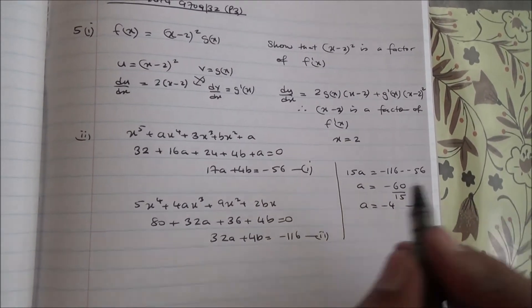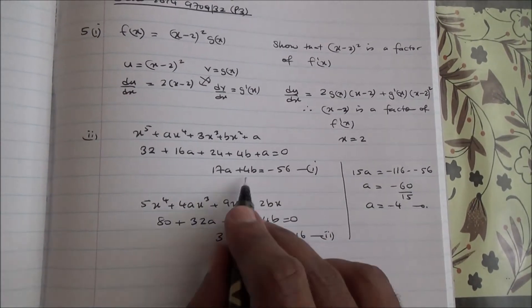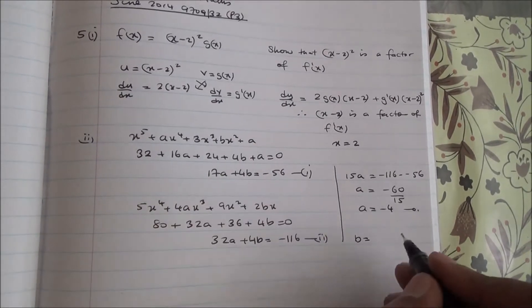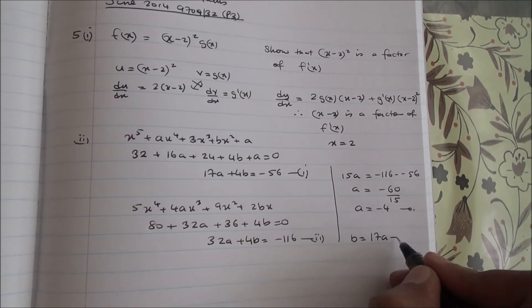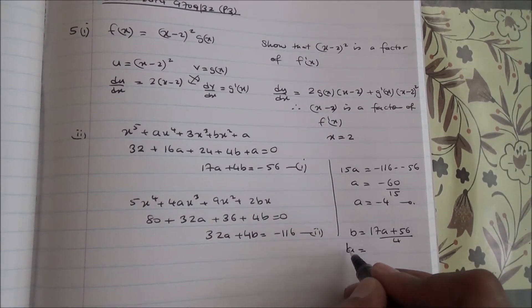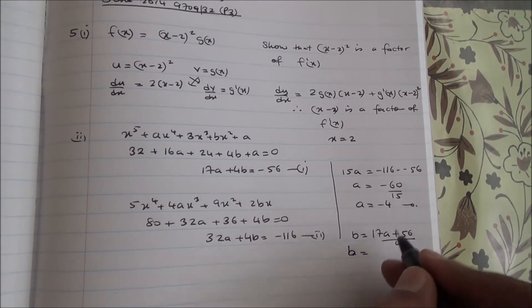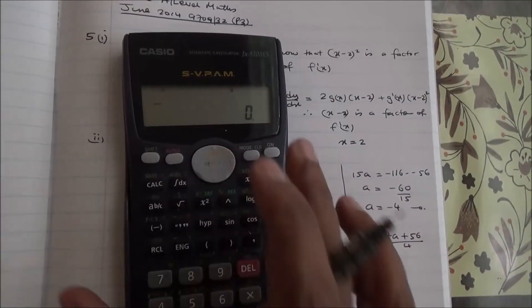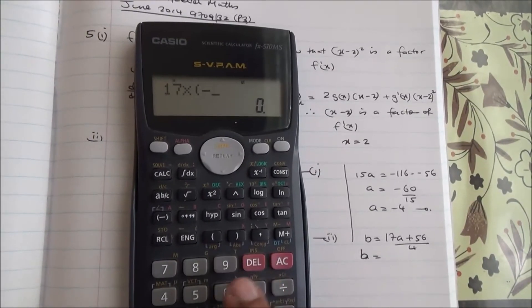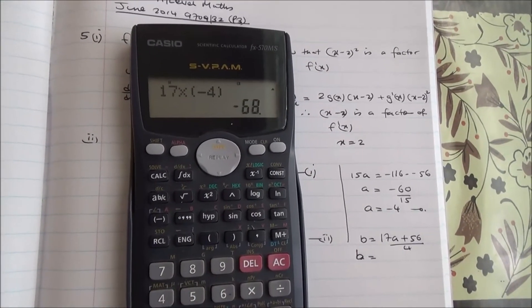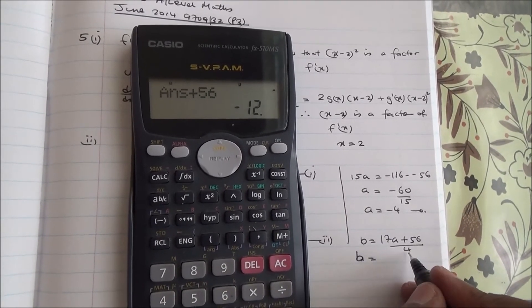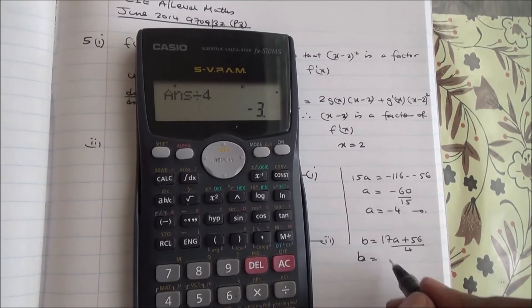Then, what is b? So, we can pick up any of the equations, let's pick up this one. We can say b = (the 56 equation on the other side) 17a + 56 divided by 4, so b is going to equal 17×a, a is -4, so 17×(-4), it's going to give us -68 + 56, -12 divided by 4, it's going to give us -3.